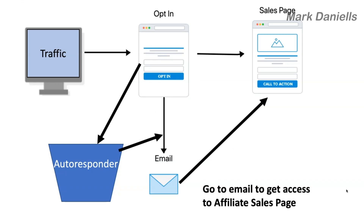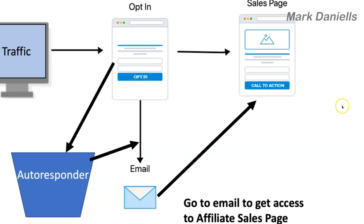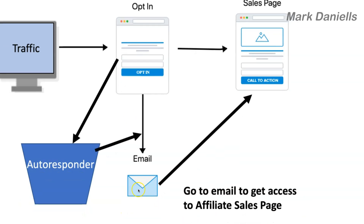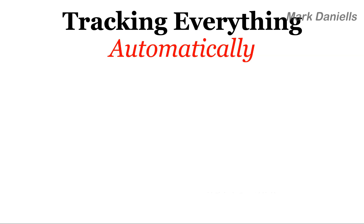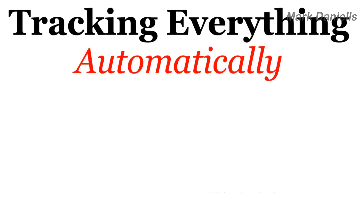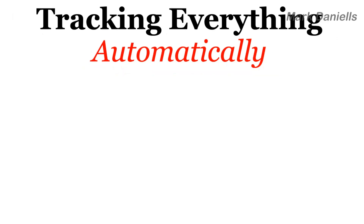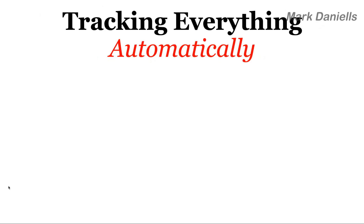It goes to the sales page automatically. Sometimes delivering something via email is okay — it depends on the value and what you're delivering and the price of the product. But make sure you avoid all the friction you can. If you send someone an email saying 'go hunt for the email so you can go to the sales page,' they might skip it. You're not the only game in town. What I've given you — the landing page, the funnel — all of it is automatic based on one action from the prospect.